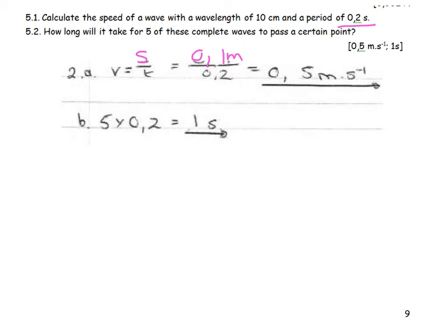How long will it take for 5 of these waves to pass a certain point? I have got the period. That's for 1 wave. Time for 1 wave. I need 5 times that number of waves in order to get 1 second.